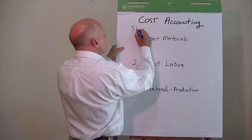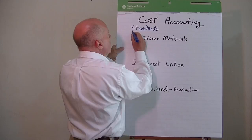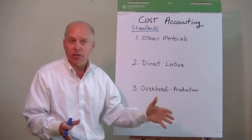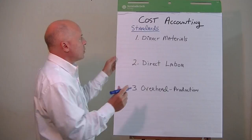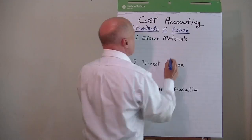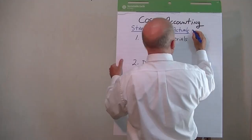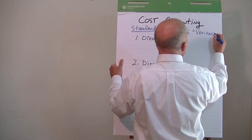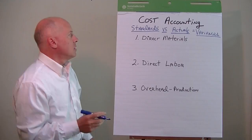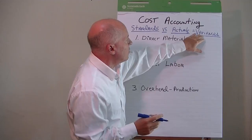Cost accounting basically establishes standards — standard units and standard measures — because businesses know exactly what their production and manufacturing process is, and they know exactly what their costs are. Because it becomes so highly predictable, they can establish these standards and then compare them to the actuals out of the production or manufacturing process. The difference between these standards and actuals gives rise to variances. In the world of cost accounting, special accounts are set up to measure standards against actuals and record those variances.